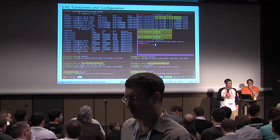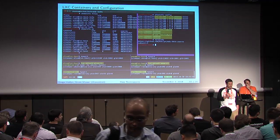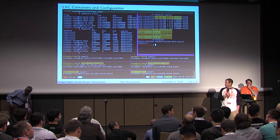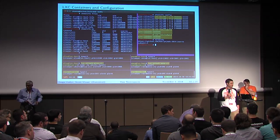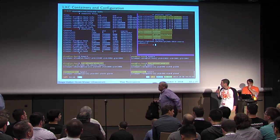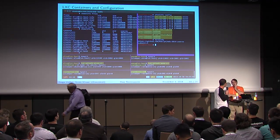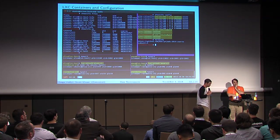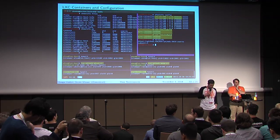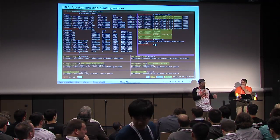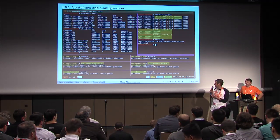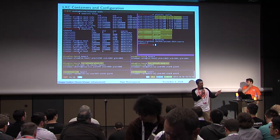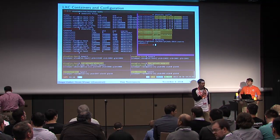A: Getting further isolation would require hardware help, and some hardware help is on the way. Right now, with containers and user namespaces, the level of security is equivalent to: if you would give someone unprivileged shell access, you can give them unprivileged container access. It's that level of security — not full hypervisor isolation, but equivalent to a standard multi-user system.